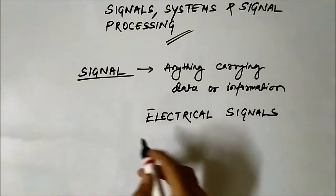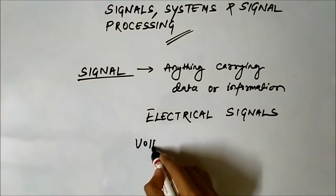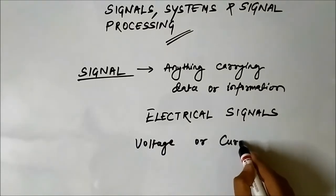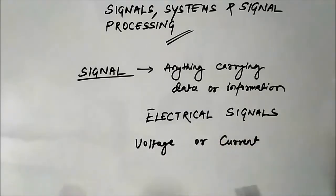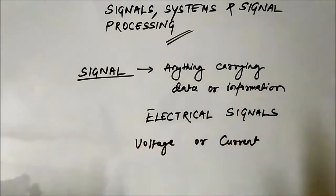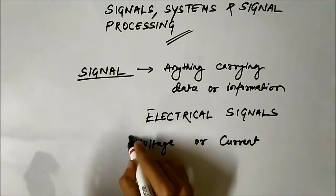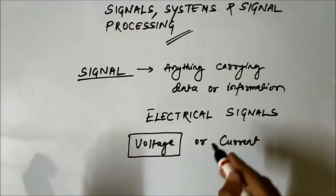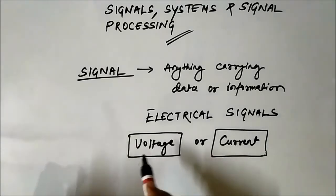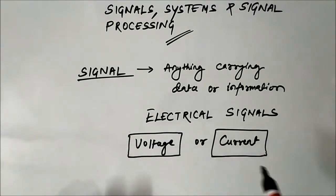By electrical signals I mean voltage or current. From this voltage or current signal we can calculate other parameters such as energy, power, RMS value, average value, and all other things. Most of the electrical signals we come across will be either in the form of voltage or current.